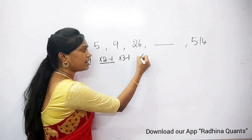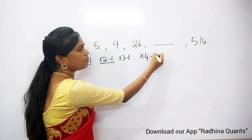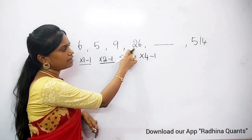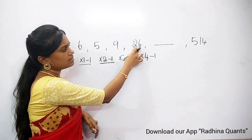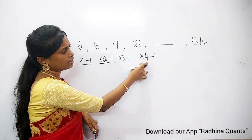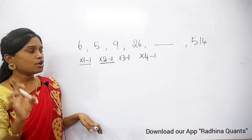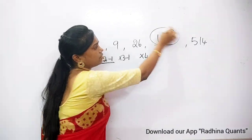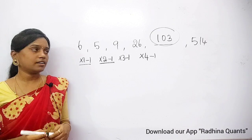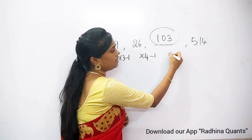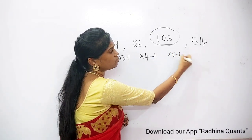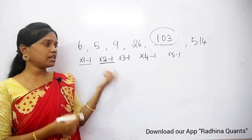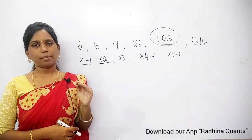Next, we continue: 26 into 4 minus 1. 26 multiplied by 4: 20 into 4 is 80, 6 into 4 is 24, total 104. Then 104 minus 1 is 103. So the answer to this question is 103. This is the fourth operation — double operation. Note this pattern.